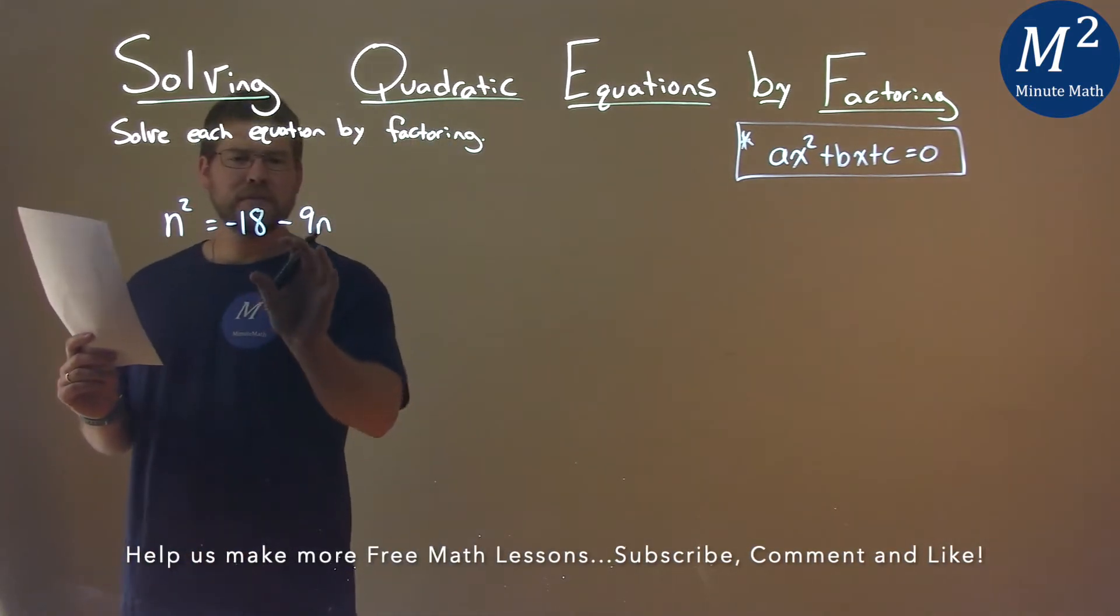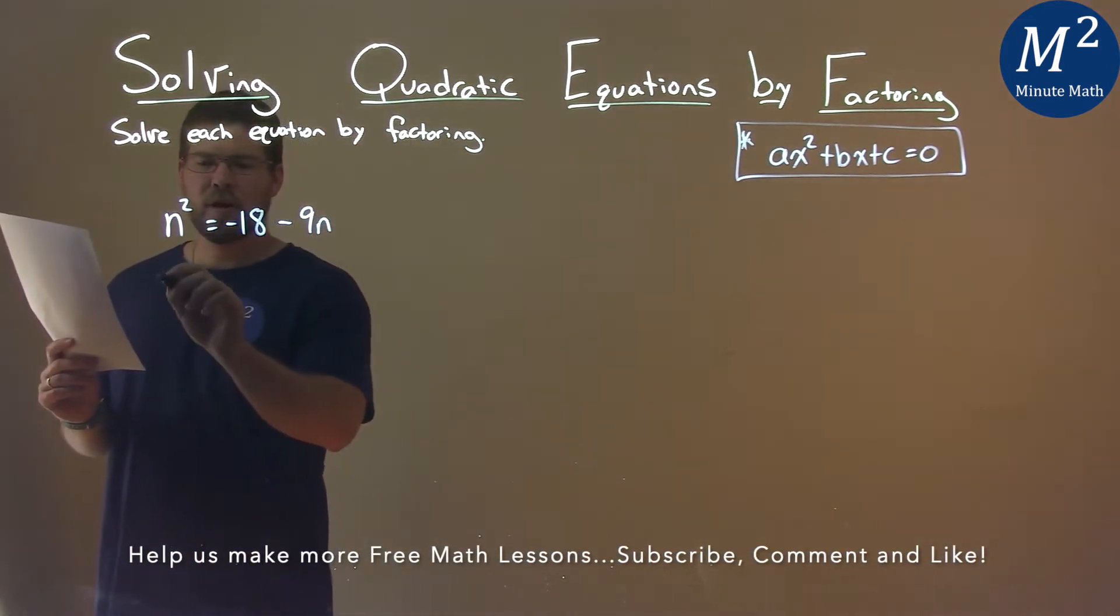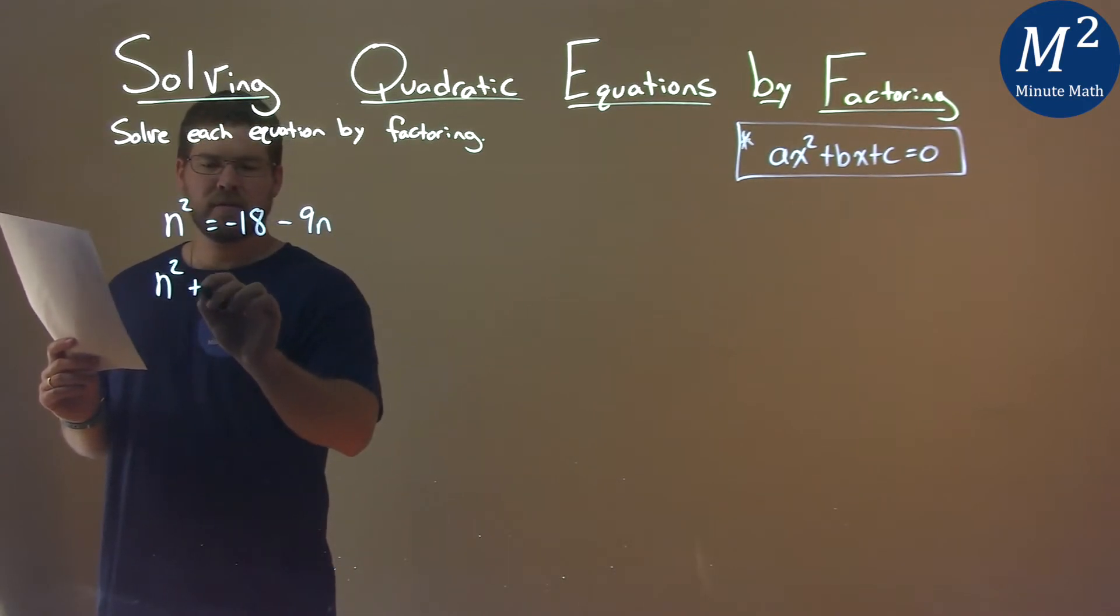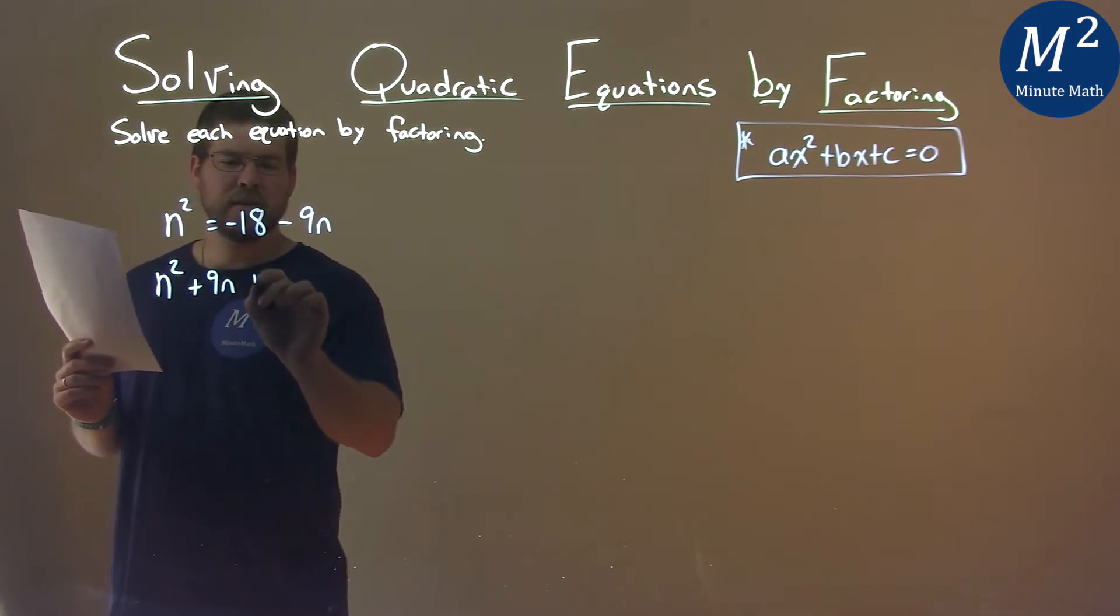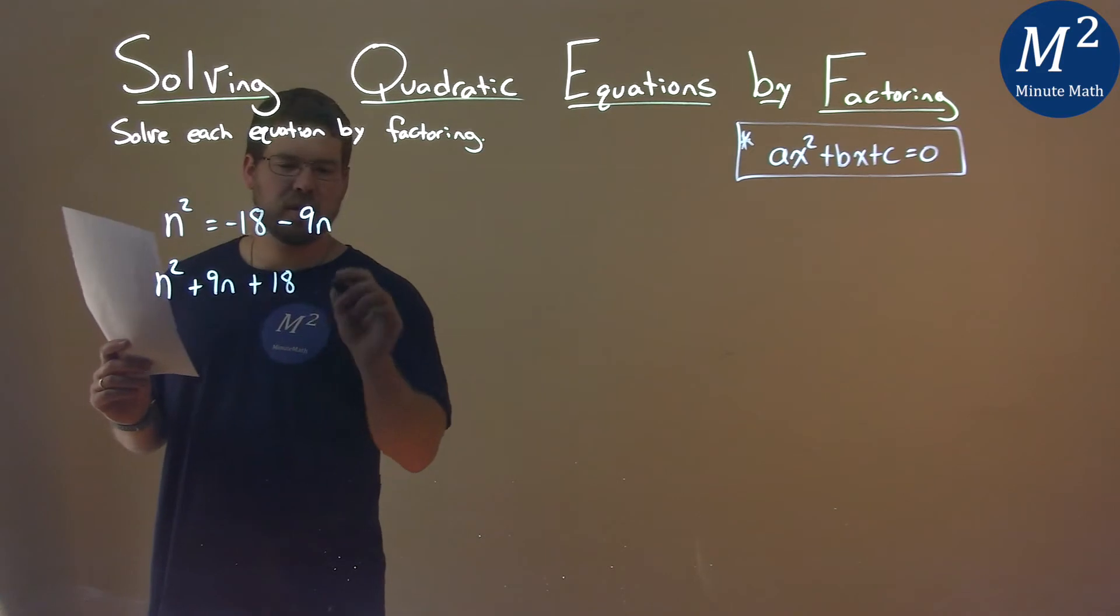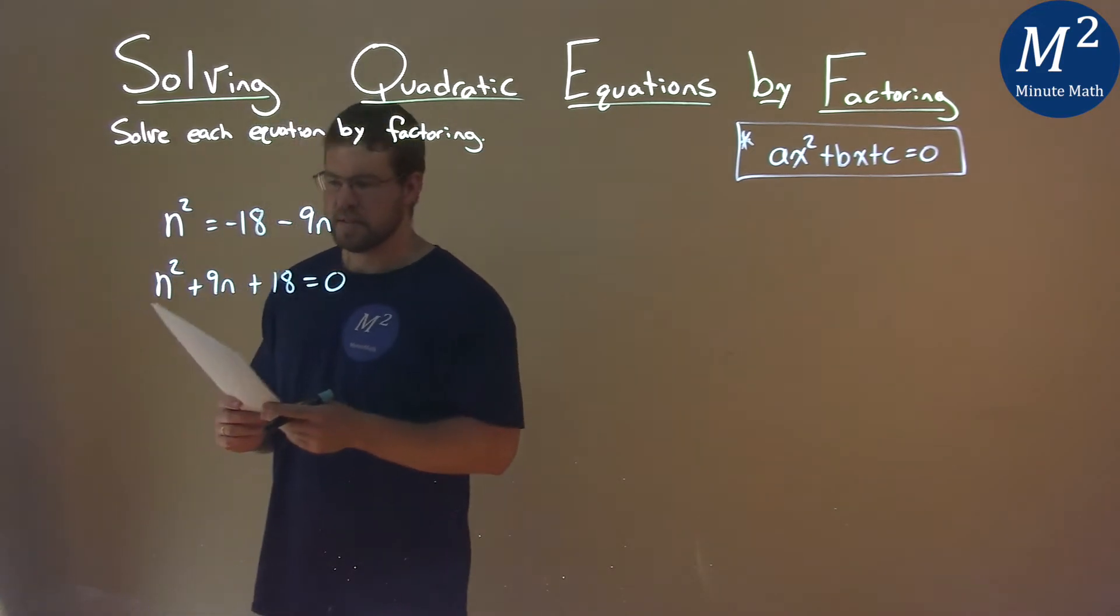First thing I want to do is let's get this equal to zero. So I have my n squared and I'm going to add 9n to both sides and I'm going to add 18. So just bringing everything over to the left and that's equal to zero.